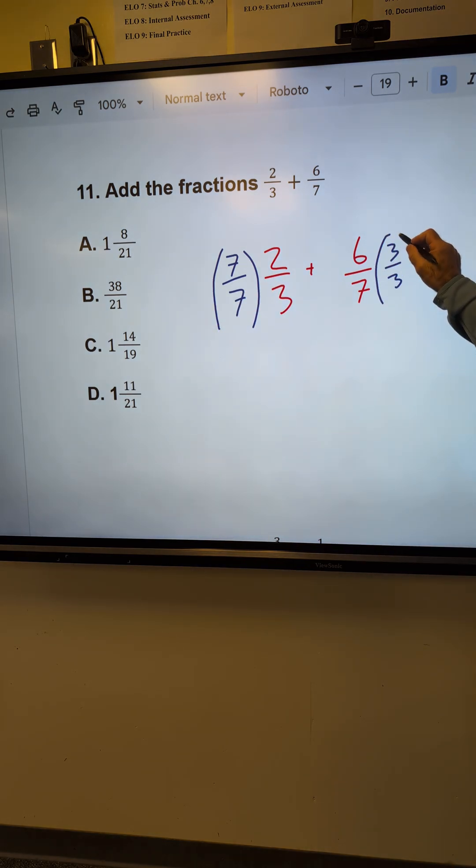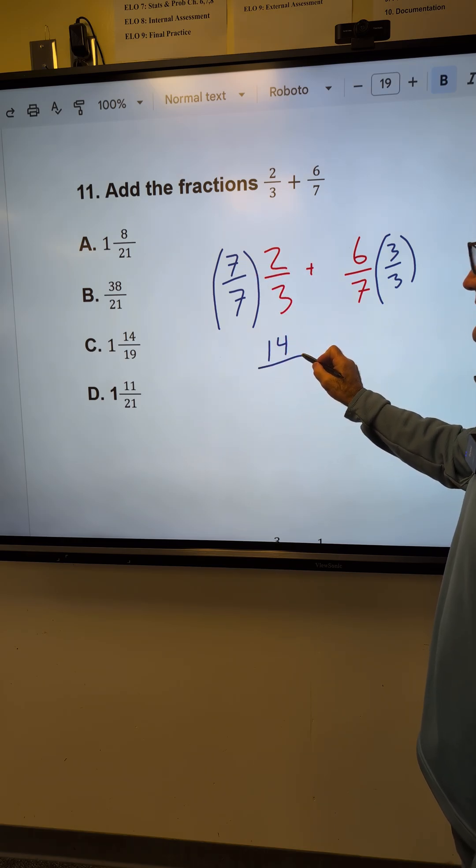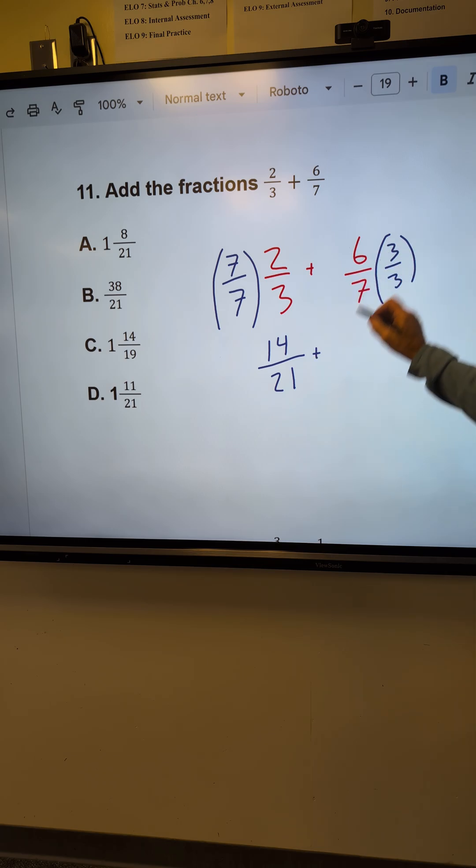Multiply this by three over three. That's going to give me fourteen, seven times two, over seven times three, plus eighteen, over twenty-one. I now have that common denominator.